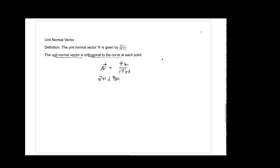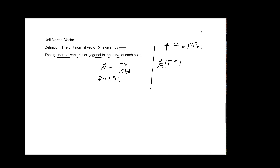Why is that? It comes from the fact that the unit tangent vector is a unit vector. So if we take the dot product of the unit tangent vector with itself, we get the square of its length, which is just one. Because the dot product is coordinate-wise product-like, if we want to differentiate T dot T with respect to t, we can use a vector version of the product rule.